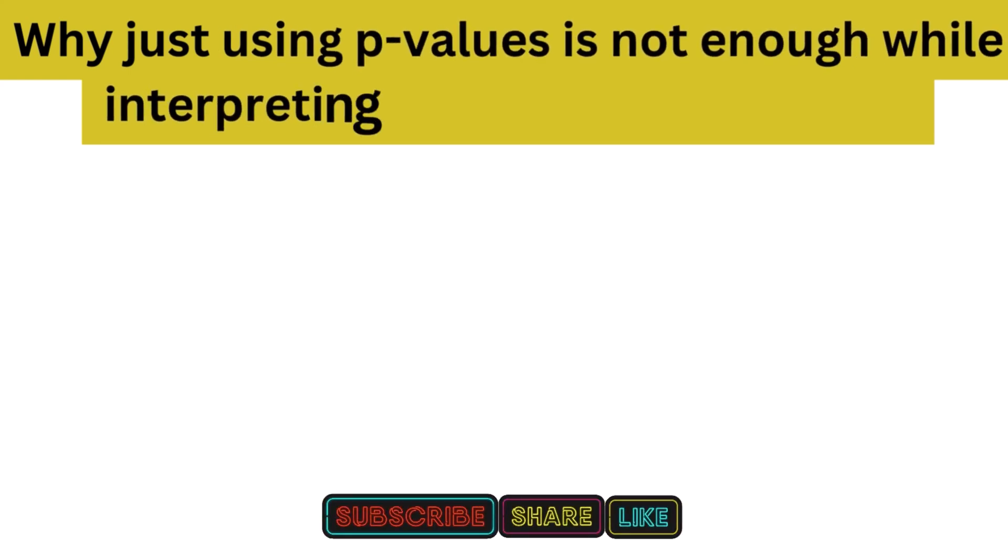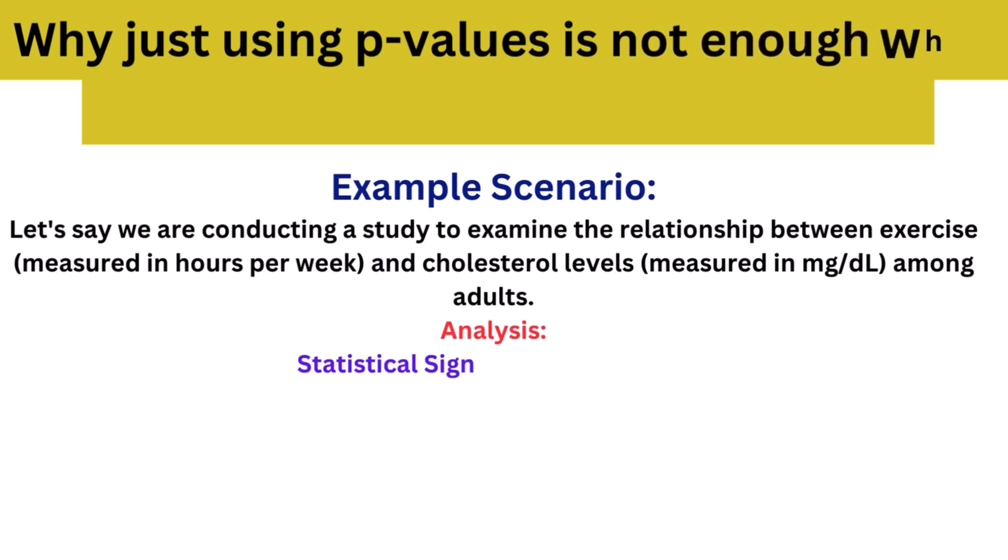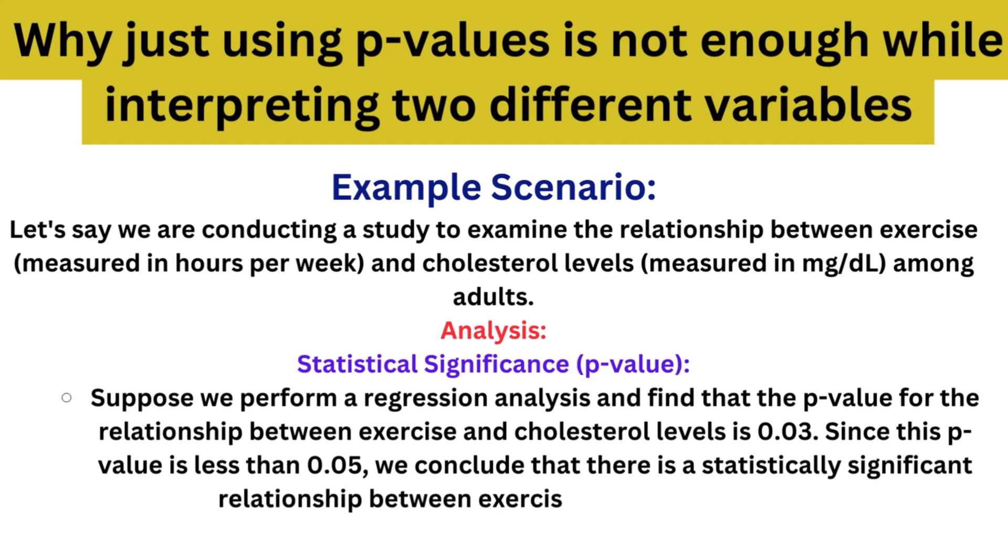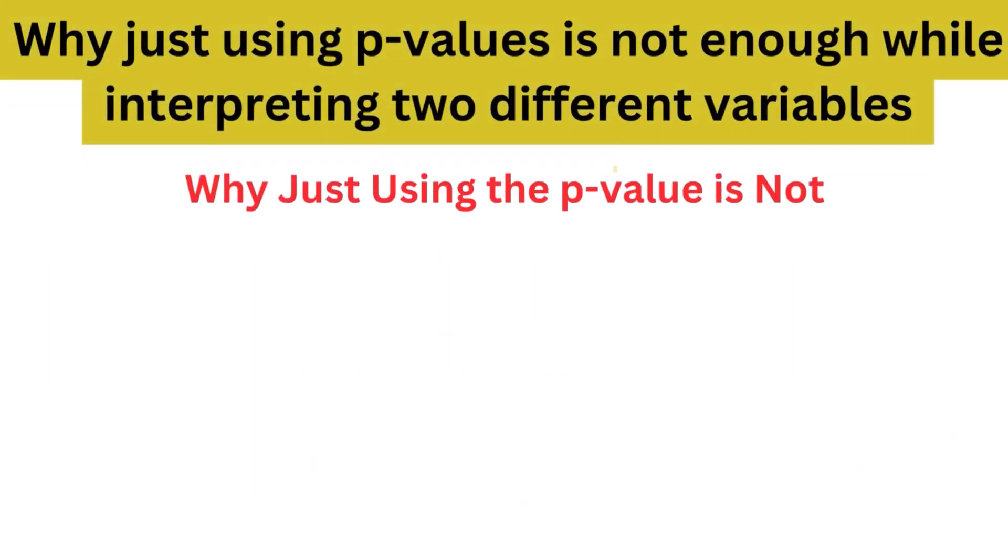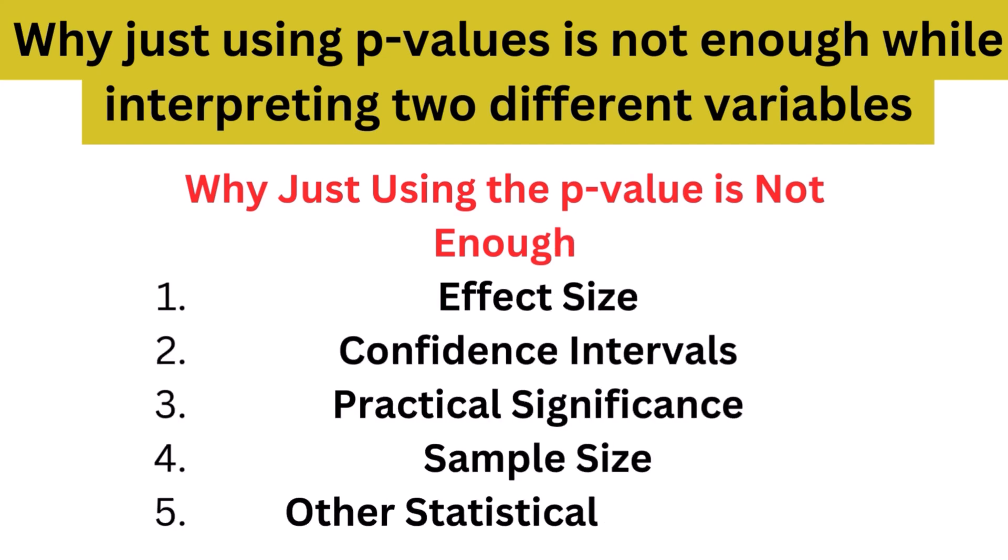Why is just using p-values not enough while interpreting two different variables? P-values can indicate whether or not the null hypothesis should be rejected. However, p-values alone are not enough to show the relative size differences between groups. Therefore, both the statistical significance and the effect size should be reported when discussing the results of a study.